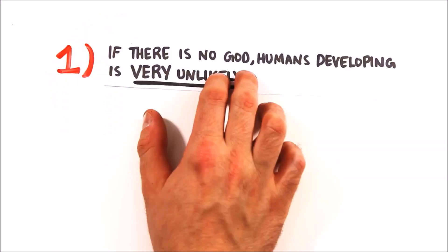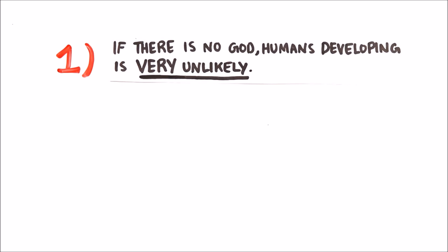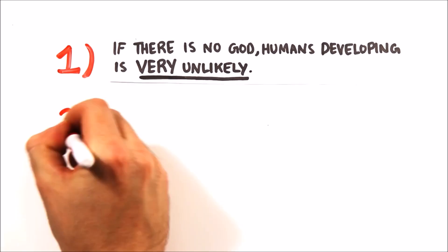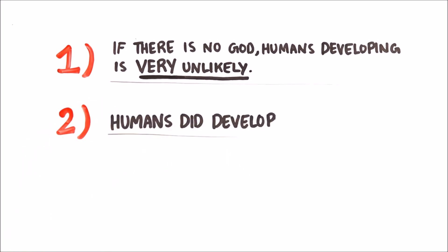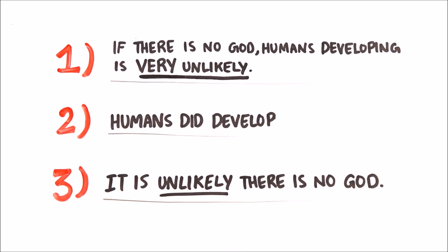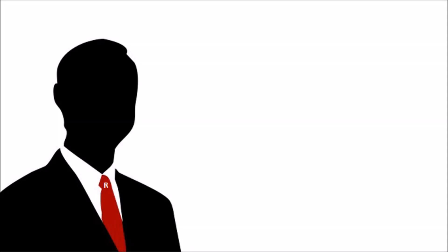In this case, it suggests that one, if there's no God, humans developing is very unlikely. Two, humans did develop, therefore three, it is unlikely that there's no God. So one of the initial problems you will run into is determining likelihood.